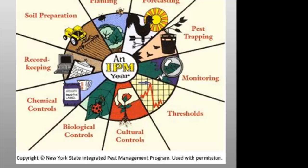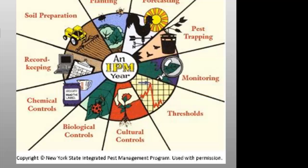We then have to monitor and identify those pests. Not all insects, weeds and other living organisms actually require control — many are innocuous and some are even beneficial. IPM programs work to monitor for pests and identify them accurately so that appropriate control decisions can be made in conjunction with action thresholds. Monitoring and identification removes the possibility that pesticides will be used when they're not really needed, or that the wrong kind of pesticide will be used.